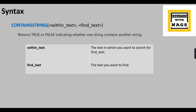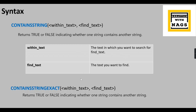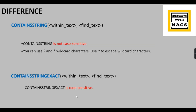Once the searchable string is found within the text, it will return TRUE, otherwise it will return FALSE. CONTAINSSTRING.EXACT has the same syntax — within_text and find_text — and also returns TRUE or FALSE. The key difference is that CONTAINSSTRING is not case sensitive, so capital A and small a will both return TRUE. If case sensitivity is a key factor, you need to use CONTAINSSTRING.EXACT, as the name indicates it performs a case-sensitive search.